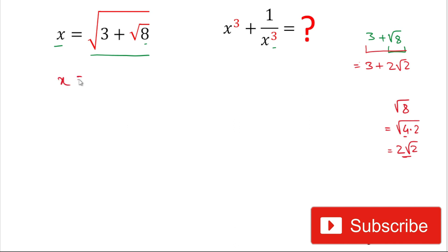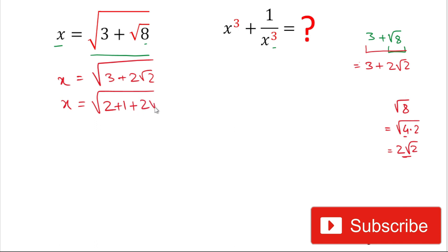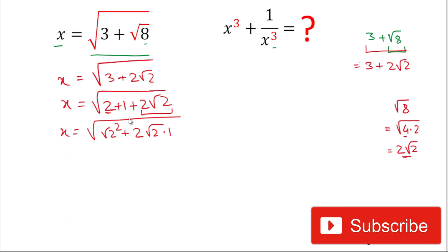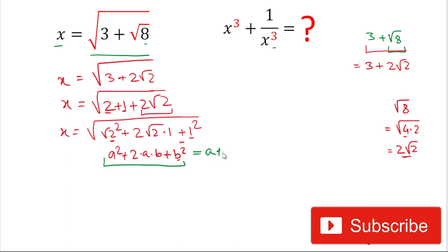Now we put the value of x. x equals square root of 3 plus 2 square root 2. We will write 3 as 2 plus 1. So x equals square root of 2 plus 1 plus 2 square root 2. We write 2 as square root 2 squared, and the middle term 2 square root 2 is 2 times square root 2 times 1, and 1 equals 1 squared. This expression is in the form of a squared plus 2ab plus b squared, which equals a plus b whole squared, where a equals square root 2 and b equals 1.